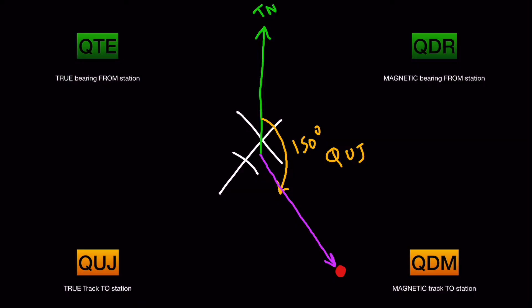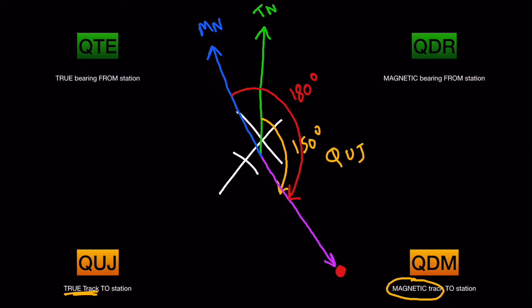QDM is exactly the same as QUJ but uses the magnetic track to the station. So QUJ is the true track to the station and QDM is the magnetic track to the station. If the ATC gives a QDM of 180 degrees, that is the magnetic track which, if flown, takes the aircraft to the station — measured from the magnetic north pole. The angle between QDM and QUJ is the variation, so you can add or subtract variation from QUJ to get QDM and vice versa.